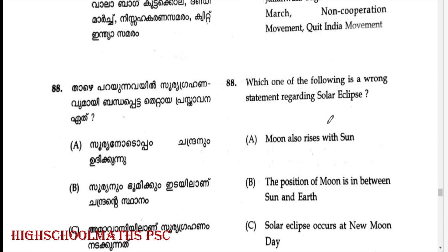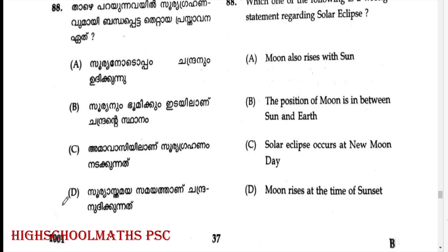Which one of the following is a wrong statement regarding solar eclipse? Answer: Option D. The correct statement is that the Moon comes between the Sun and Earth during a solar eclipse. The wrong statement is that the Moon rises at the time of sunset during a solar eclipse.